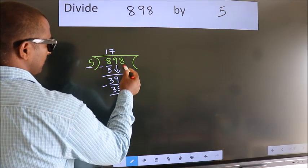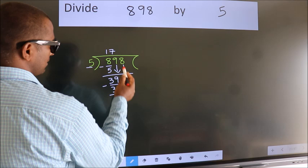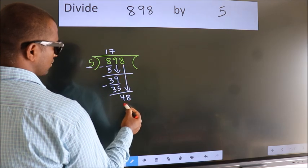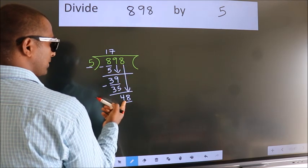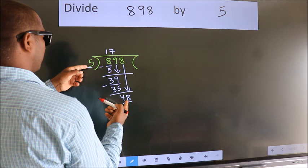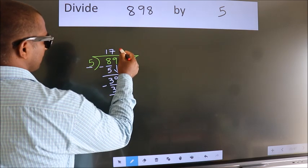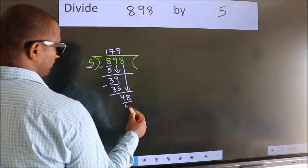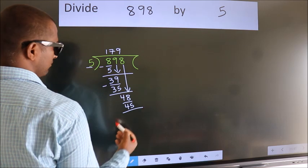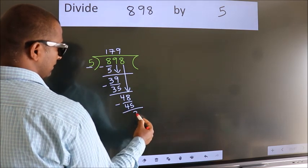After this, bring down the beside number. So 8 down, so 48. A number close to 48 in the 5 table is 5 nines 45. Now we subtract. We get 3.